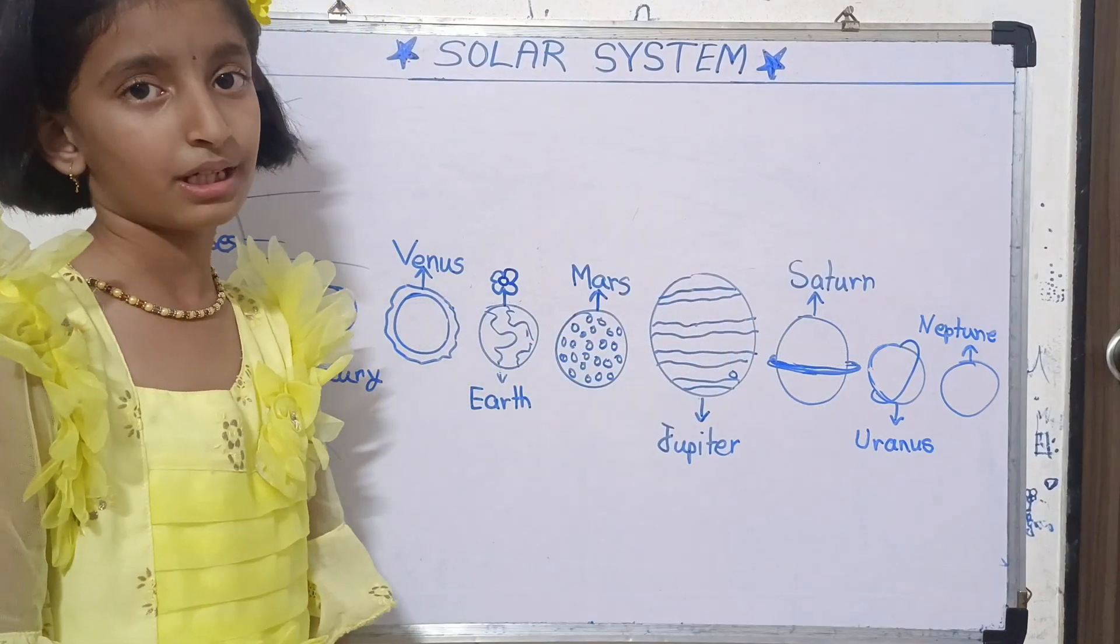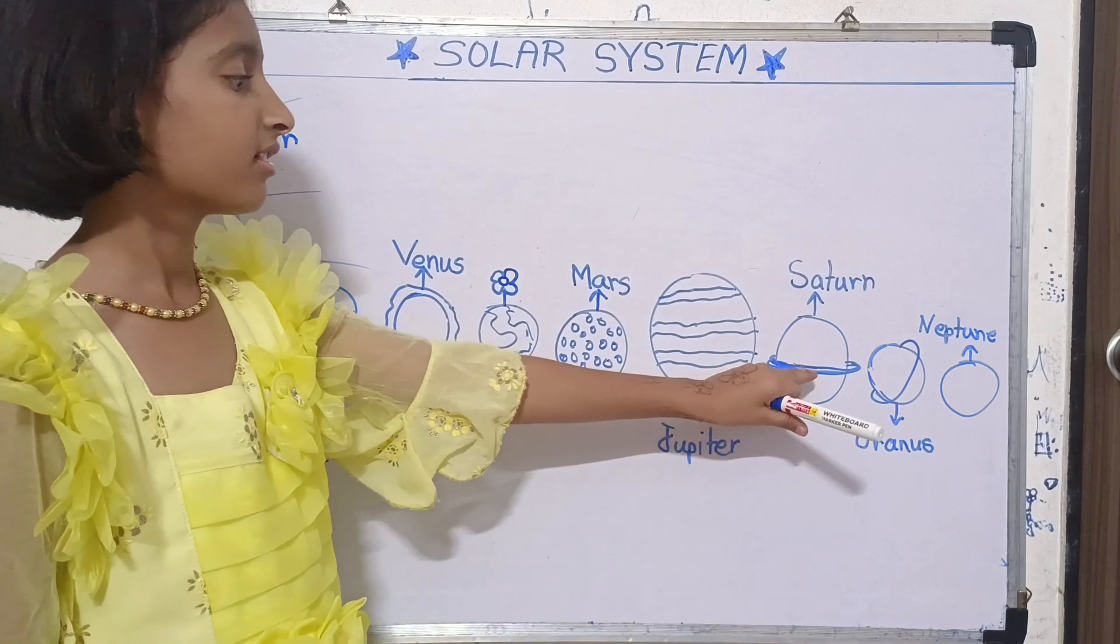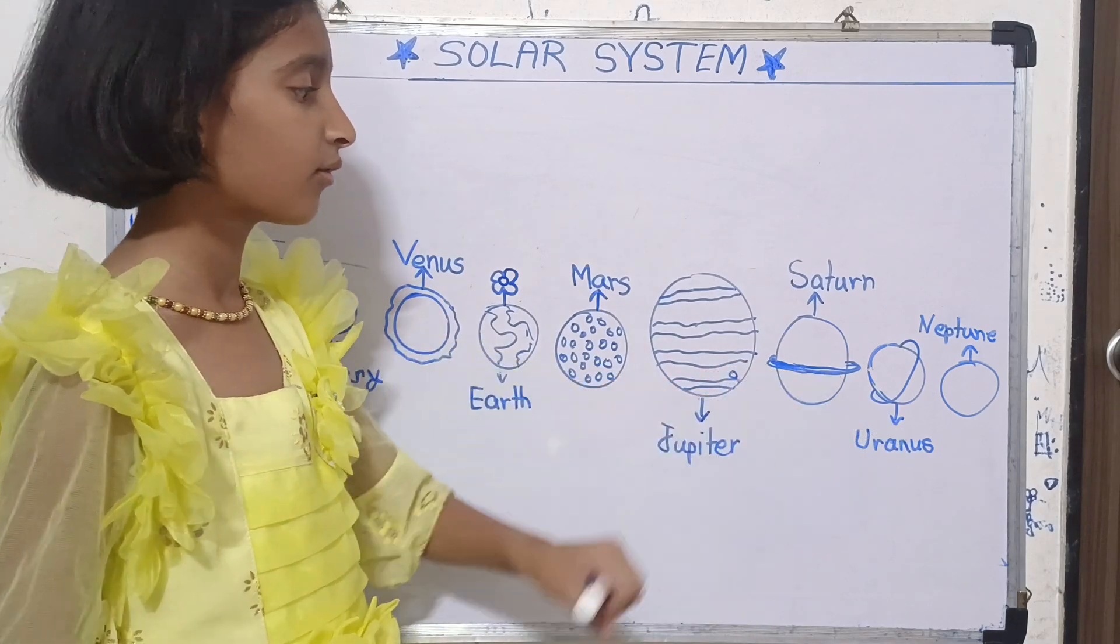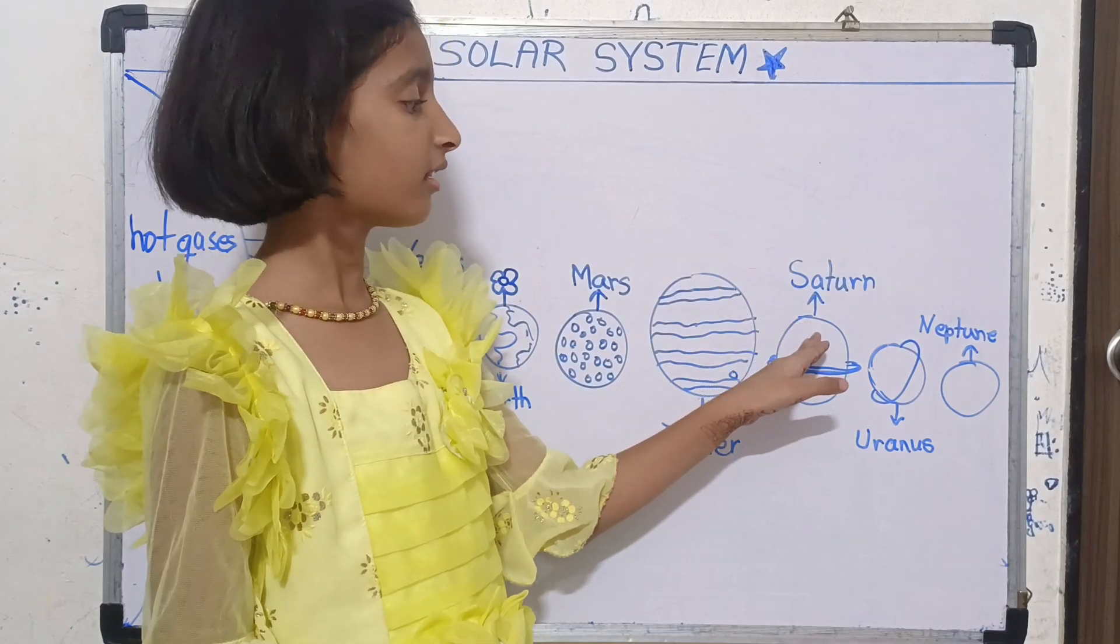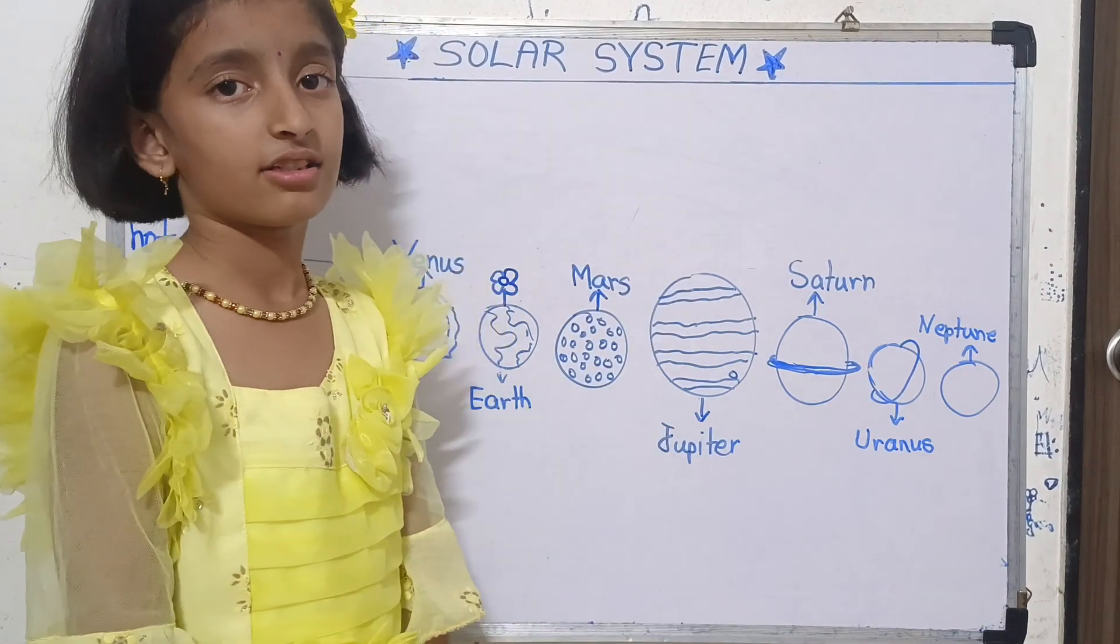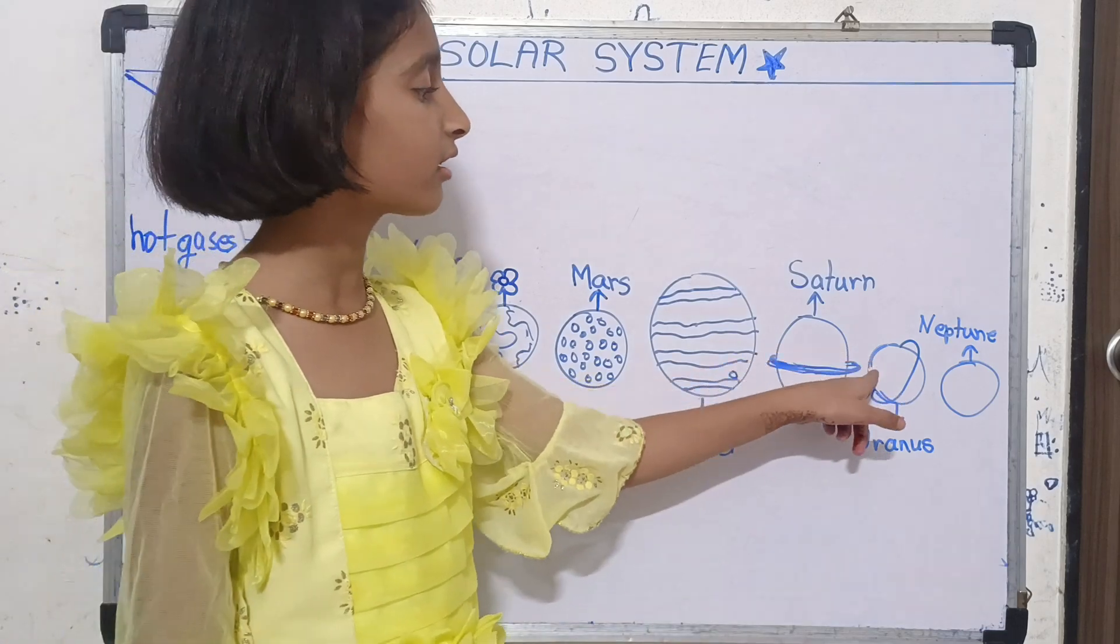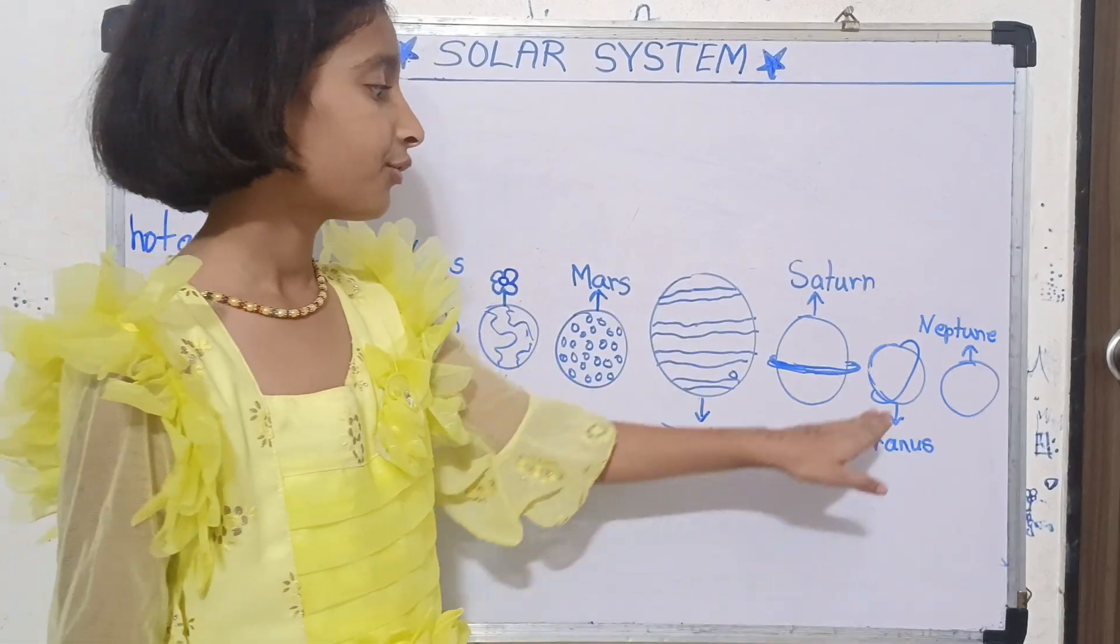Saturn. Saturn is also made up of gases and it has beautiful rings around it, and it is the second largest planet from our Earth. Uranus. Uranus has a turquoise color and only one ring around it, and Uranus is the coldest planet in our solar system.